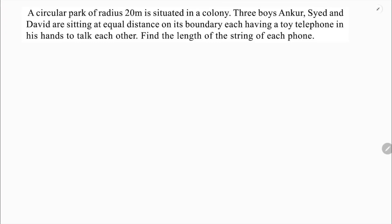A circular park of radius 20 meters is situated in a colony. Three boys, Ankar, Syed and David are sitting at equal distance on its boundary, each having a toy telephone in his hands to talk to each other. Find the length of the string of each phone.